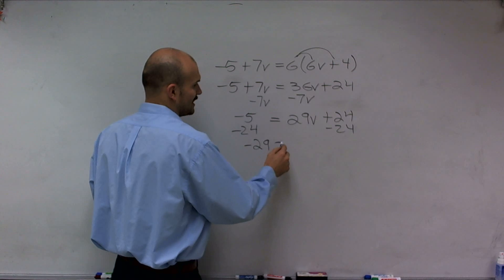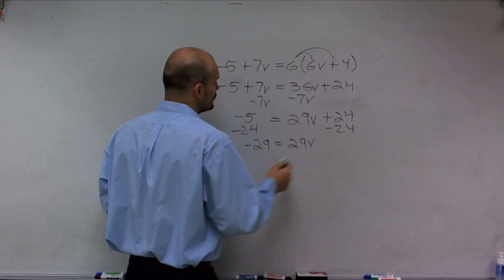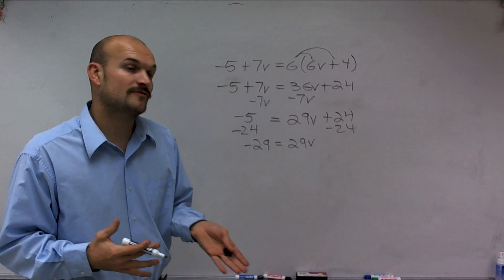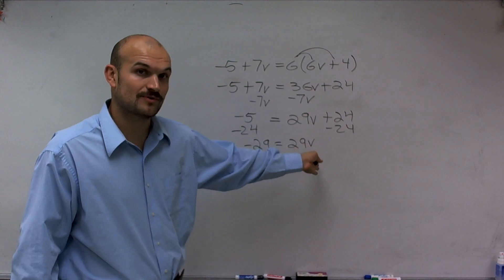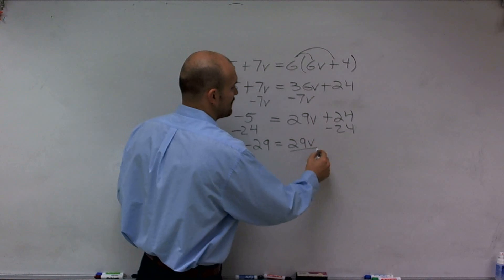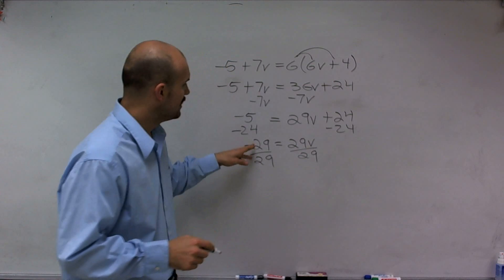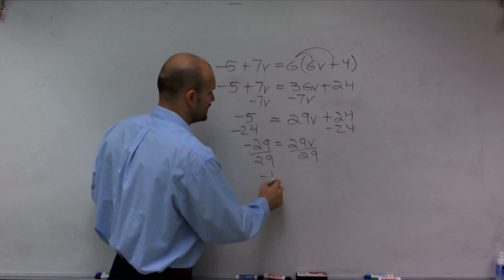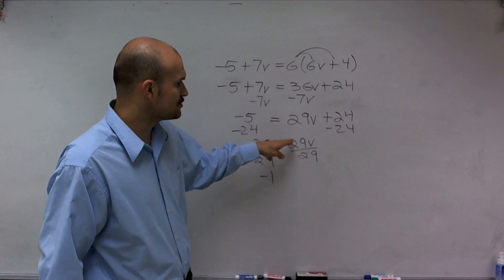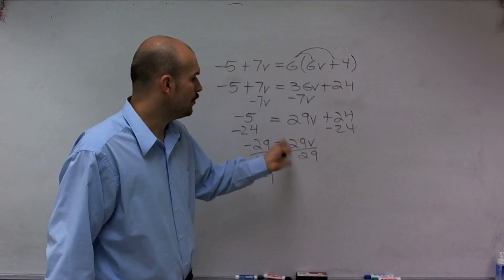Therefore, I get negative 29 equals 29v. Now, to isolate my variable further, since my variable is being multiplied by 29, I need to divide by 29. So I'm going to divide by 29 on both sides using the division property of equality. Negative 29 divided by 29 equals negative 1, and 29 divided by 29 is 1. 1 times v is v.